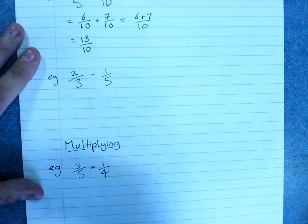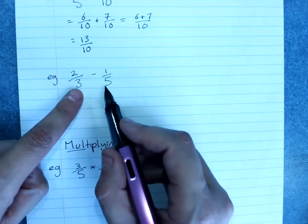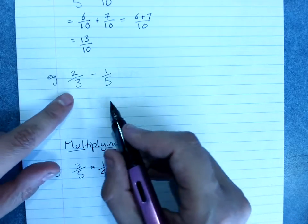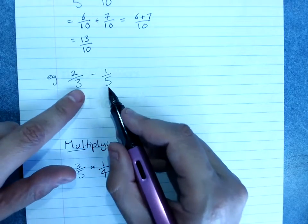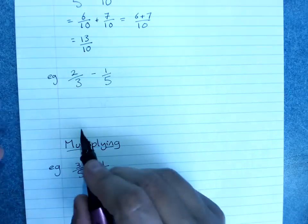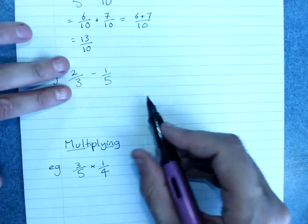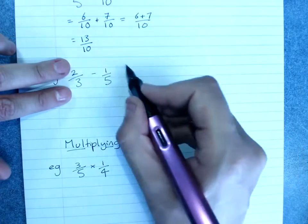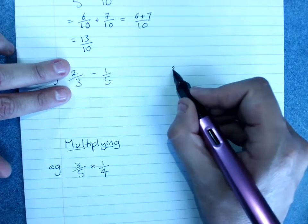Subtracting, we still need a common denominator. And to find a common denominator, you're looking for the lowest common multiple of the denominators, which for 3 and 5 is 15. So I'll show working for the 2 separate fractions. 2 thirds.